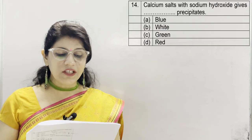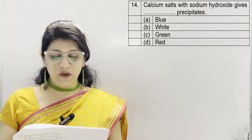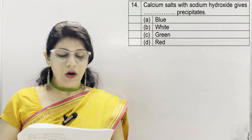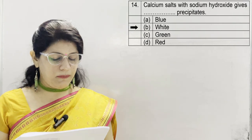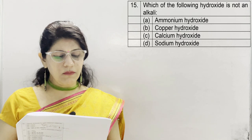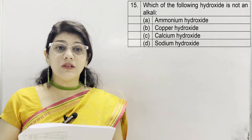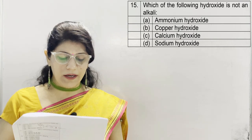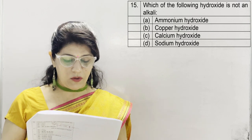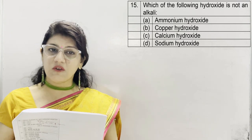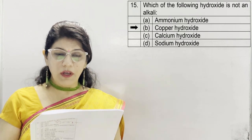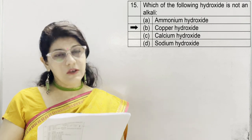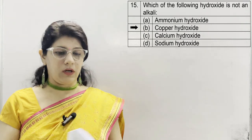In question 14, calcium salts with sodium hydroxide give dash precipitate. Options: A blue, B white, C green, D red. Option B, white precipitate, is correct. Question 15: which of the following hydroxides is not an alkali? Options: A ammonium hydroxide, B copper hydroxide, C calcium hydroxide, D sodium hydroxide. Correct option is B, copper hydroxide — because cupric hydroxide and ferric hydroxide are insoluble in water, so they are bases but not alkalies.